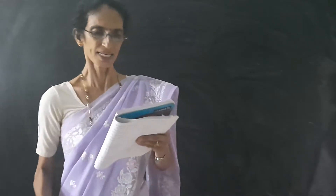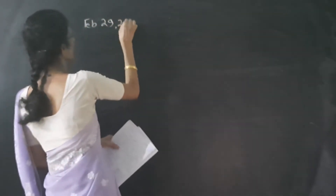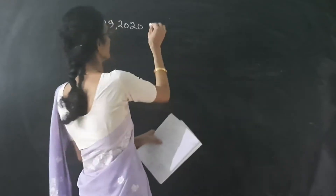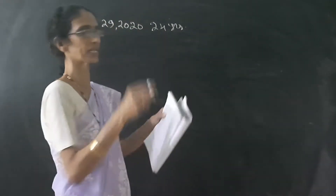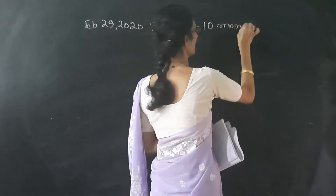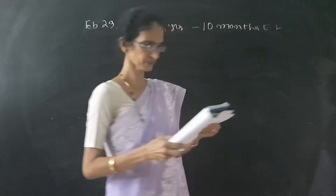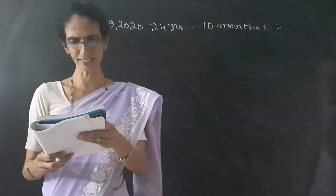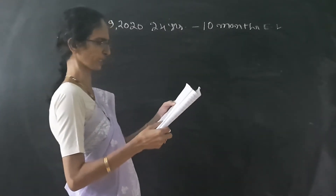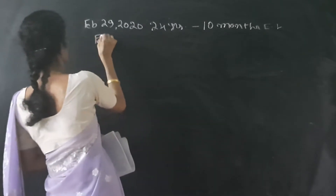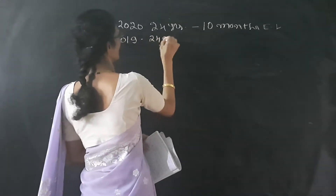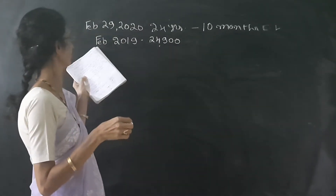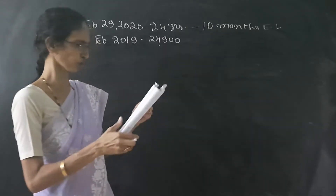The problem is like this. He retired from service on September 29, 2020, after serving for 24 years and had 10 months earned leave to his credit. His salary for the month of February 2019 was 24,900.